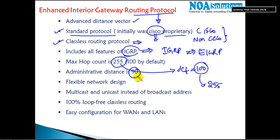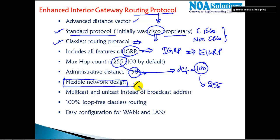The administrative distance for EIGRP is 90, which represents the trustworthiness of the information received from the router. A good feature of EIGRP is that it provides flexible network design — you can design your network in any way. That is one advantage when you compare with OSPF.